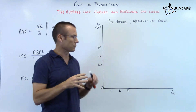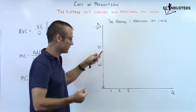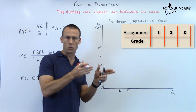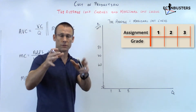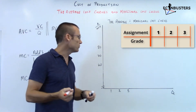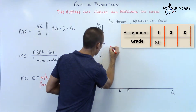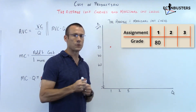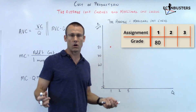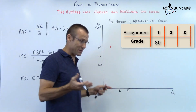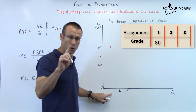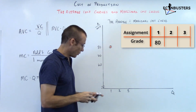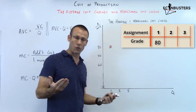Let's use numbers — this is what makes it easy. First assignment, or first good produced: the grade you make is an 80. I'm going to put a red dot right there — I like to use red for my marginal cost or marginal grade. Now, if that was the only assignment all year long, your average would be that grade — an 80. So the first grade is an 80, and if that's all there was, your average would be an 80.